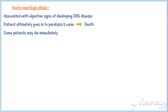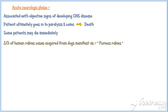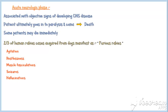Two-thirds of human rabies cases acquired from dogs manifest as furious rabies. Patients develop the following signs and symptoms: agitation, restlessness, muscle fasciculations, seizures, hallucinations, thrashing, episodic delirium, and aphasia.